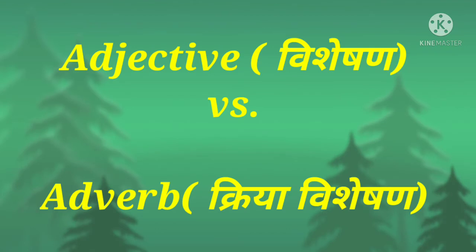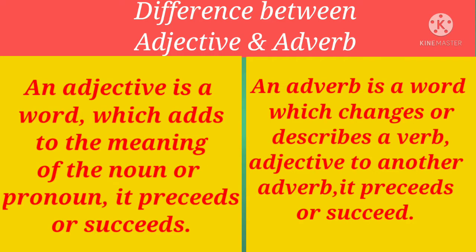Hello viewers, welcome back to my channel Skill Builder. In today's class we are going to learn the difference between adjective and adverb. Adjective is known as vishetion and adverb is known as kriya vishetion. Before starting the class, let me tell you the correct pronunciation of this word is 'adjective,' though you generally hear people calling it 'adjective.'